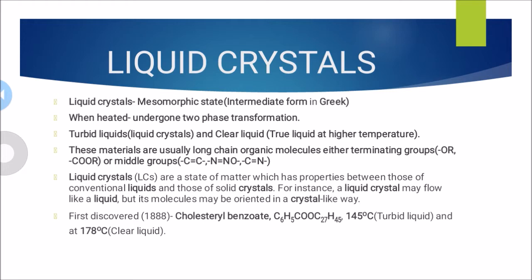When we heat the solid material of any one of the liquid crystals, it transforms into a turbid liquid at one particular temperature. And when we heat it again, it transforms to a clear liquid at another temperature. So the first transition point is the appearance of the liquid crystal, and another transformation happens at the melting point. So it undergoes two different phase transformations or phase transitions. The turbid liquid is the liquid crystal, and the clear liquid is the true liquid, which happens at a higher temperature.